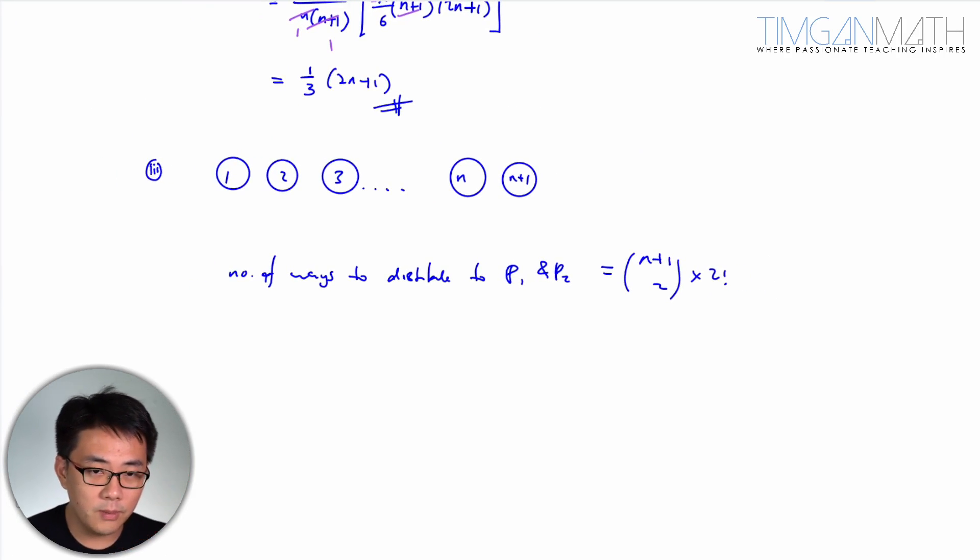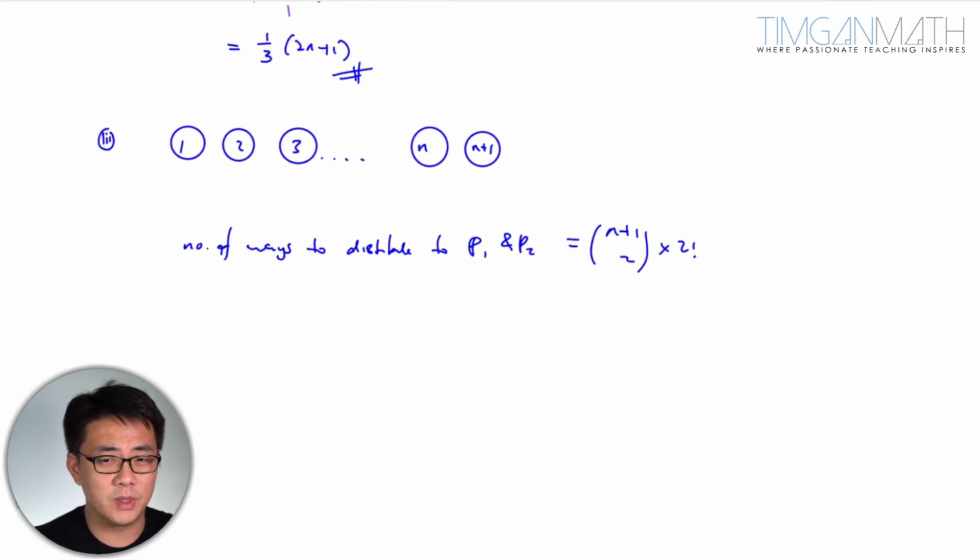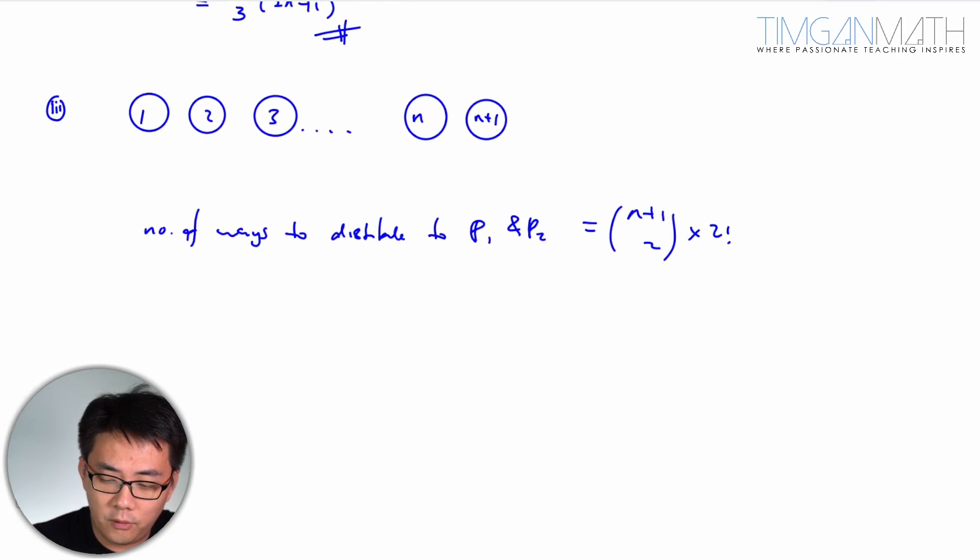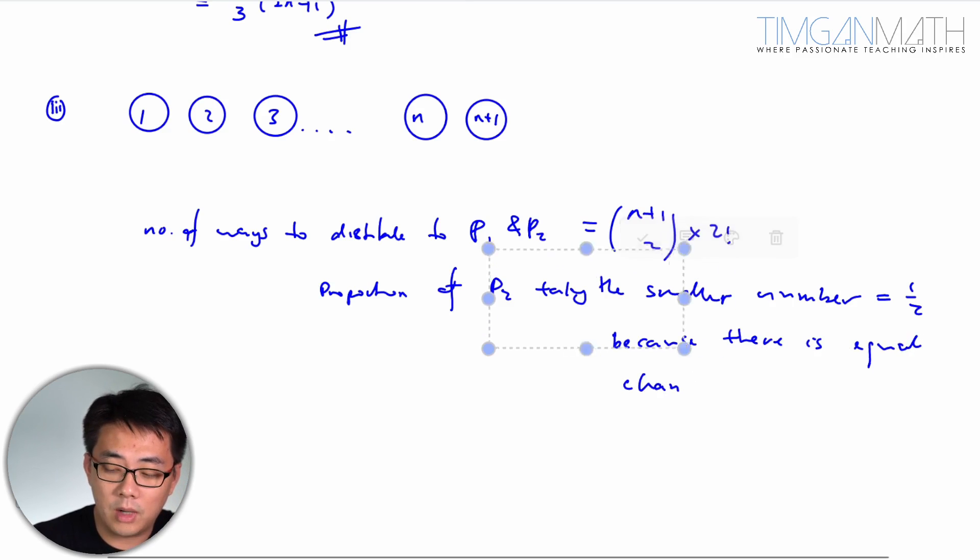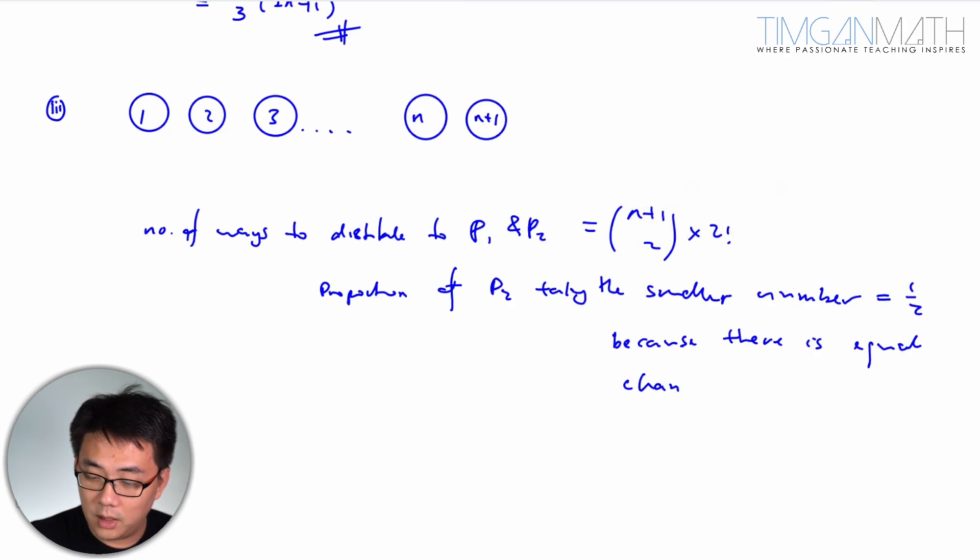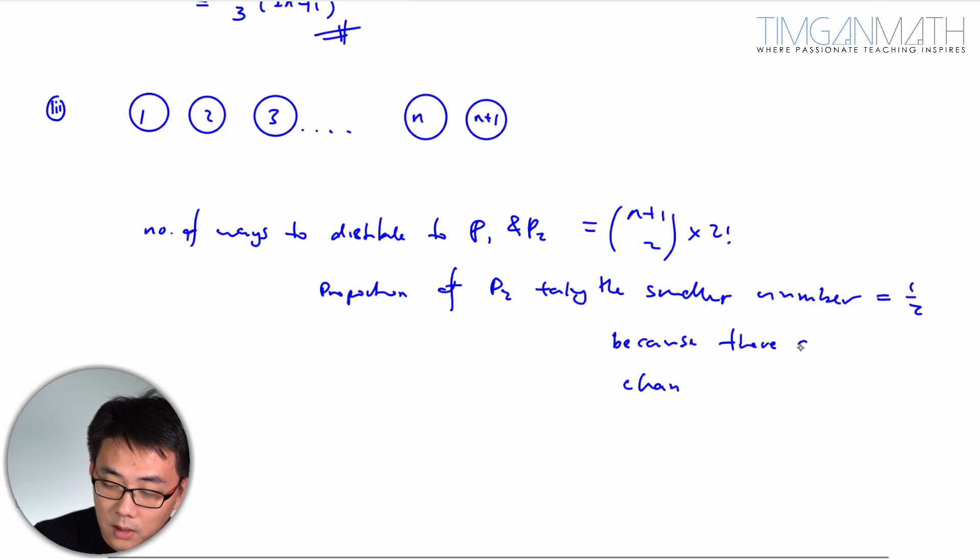Now if you take two numbers, one of it will be bigger and the other one will be smaller. Definitely one will be bigger and the other one will be smaller, right? So the proportion of P2 taking the smaller number is actually half. Because there is equal chance, there are only two outcomes, right?